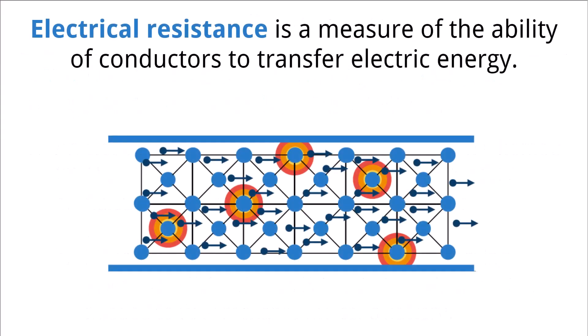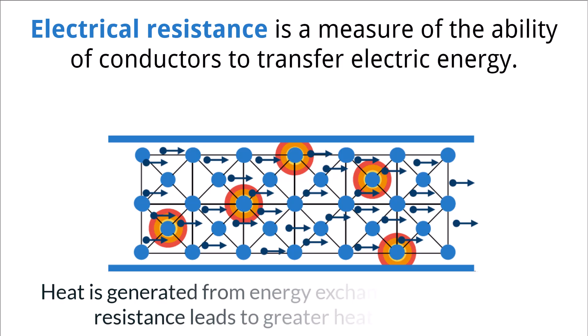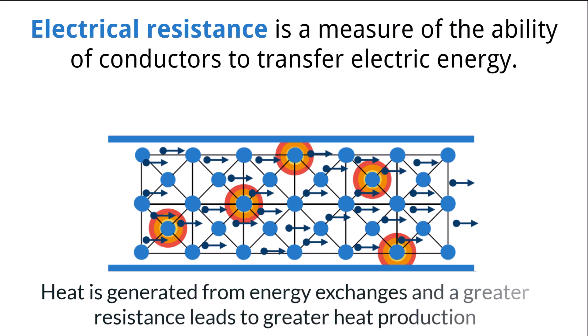Not all conducting materials effectively transfer energy in the same way. This difference in ability to transfer energy leads to electrical resistance. One effect of resistance is a heating effect — some materials like tungsten will heat up more than a material like copper because tungsten has a greater resistance. The resistance of a material is defined as the potential difference across the material divided by the current in the material. When both the current and the potential difference are known, the resistance of that material can be measured.